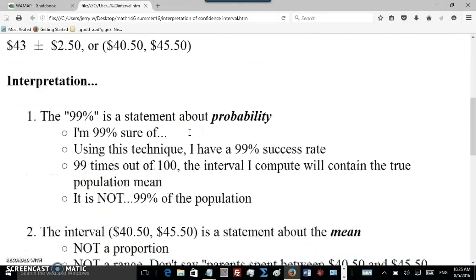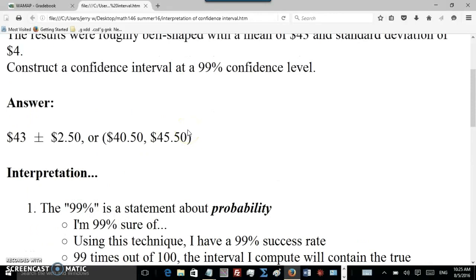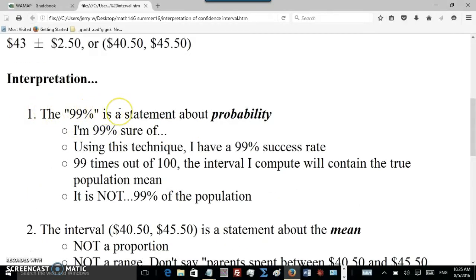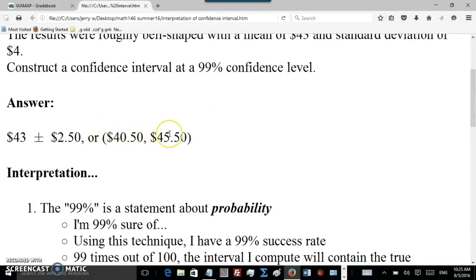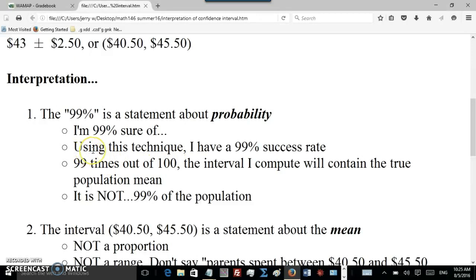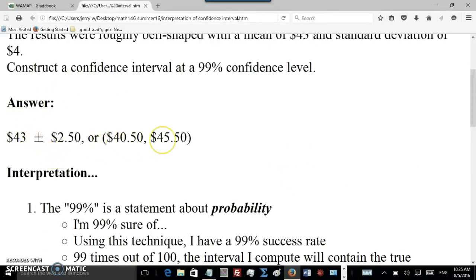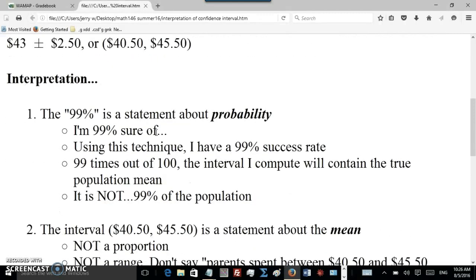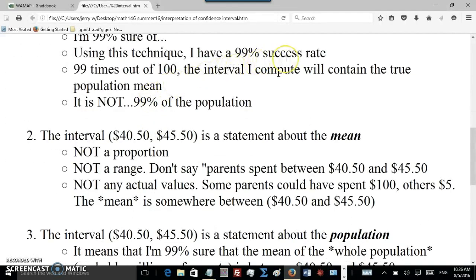There's three main points I want to make. The first is, what does the 99% part mean? So the 99% is a statement about probability. In other words, you're 99% sure or 99% confident of whatever answer you give. Here's the answer you give right here. You're 99% sure that that answer contains the real population mean, whatever that is. Or you can say it like this: using these calculations of calculating standard error, etc., that technique will give you a 99% success rate, or 99 times out of 100, the interval you compute will contain the true population mean.